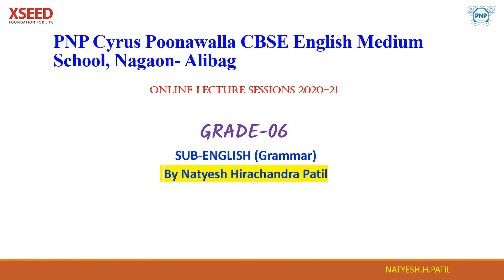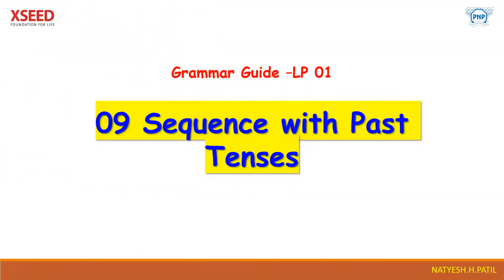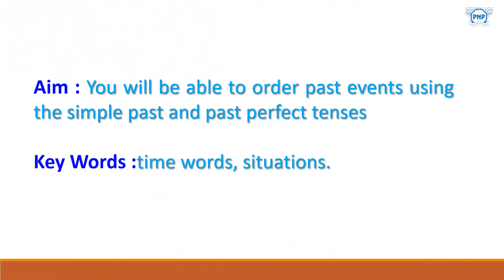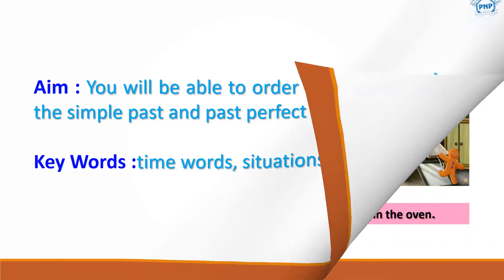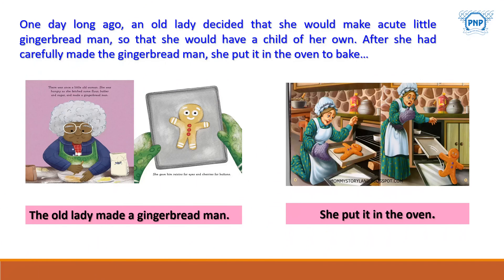Good morning to one and all. I welcome all of you to our online lecture sessions 2020-21, Grade 6. Today our subject is English grammar. We are taking Block Number 9: Sequence with Past Tenses — you can check it out on page number 33 of your grammar guide, Learning Plan Number 1. The aim of this session is that once you complete it, you will be able to order past events using the simple past and past perfect tenses. Keywords are time words and situations.